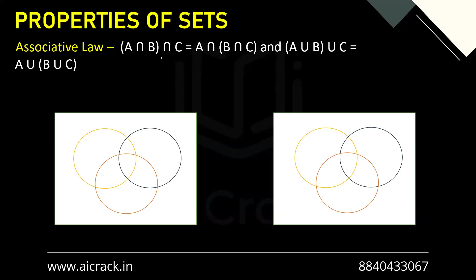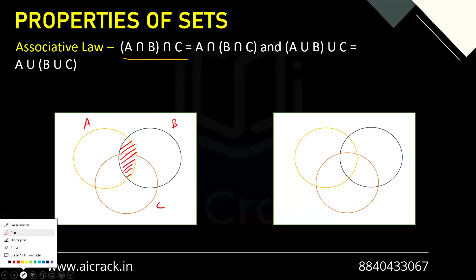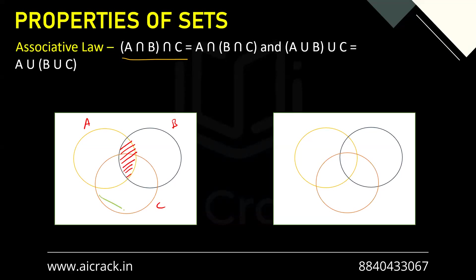Let's take the example of A intersection B intersection C. We have set A, set B, and set C. We find A intersection B first — that gives us a certain region — and then we intersect with C. The C elements overlap partially, and eventually we get a specific region as a result of (A intersection B) intersection C.